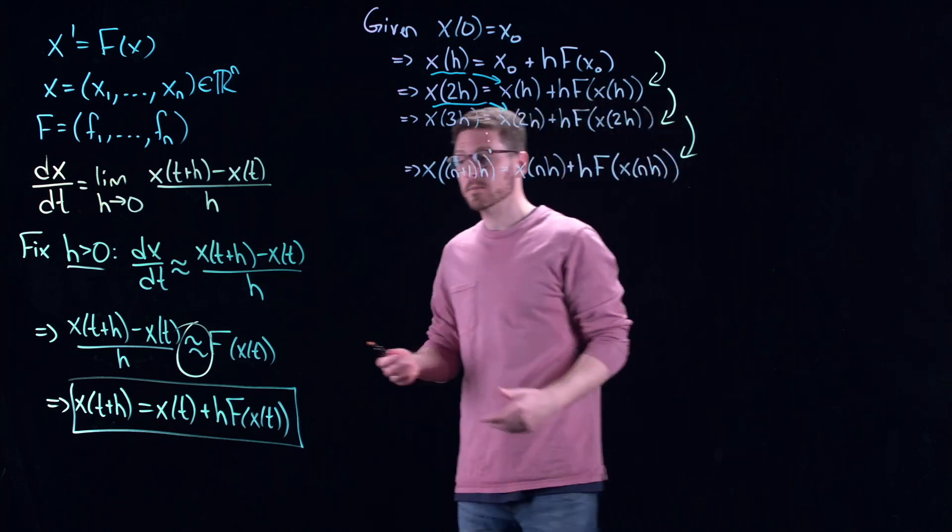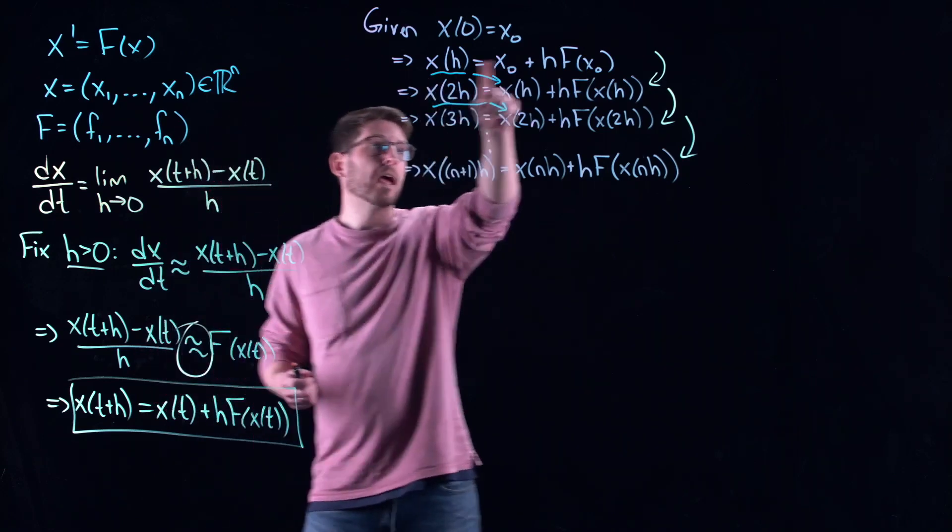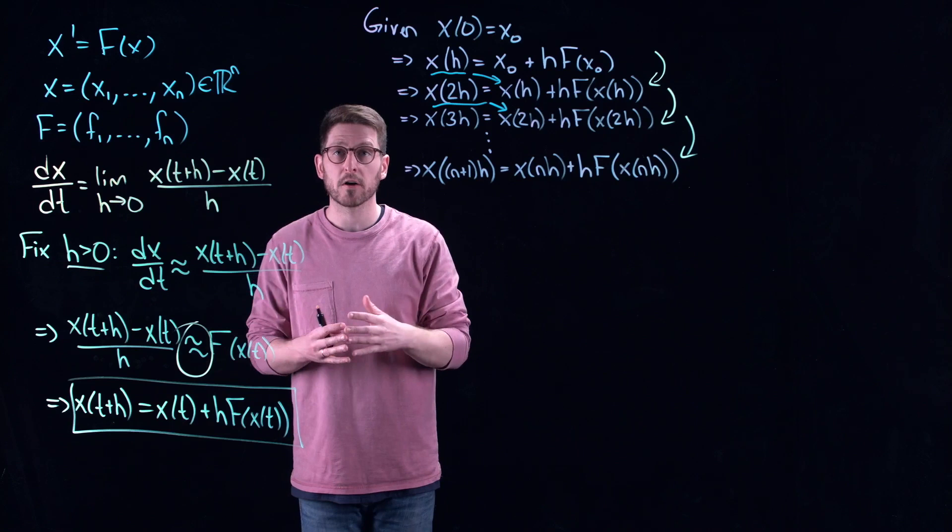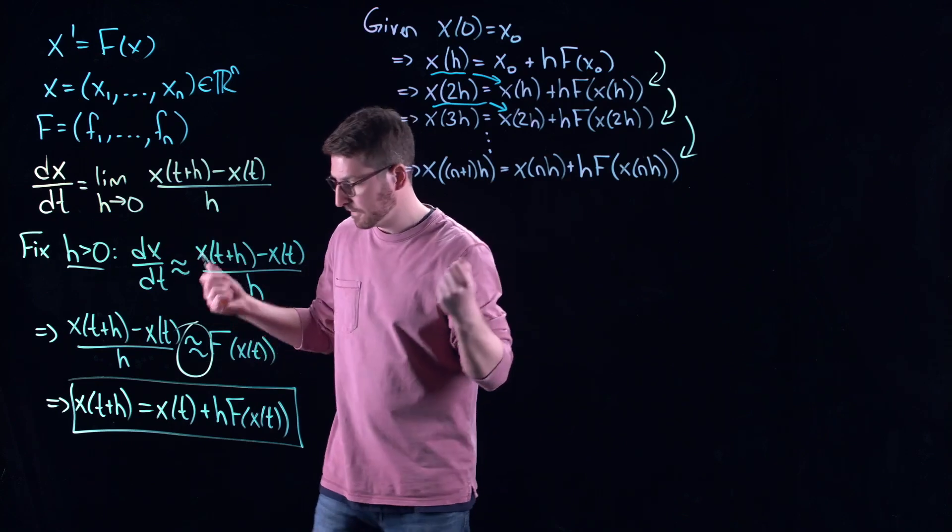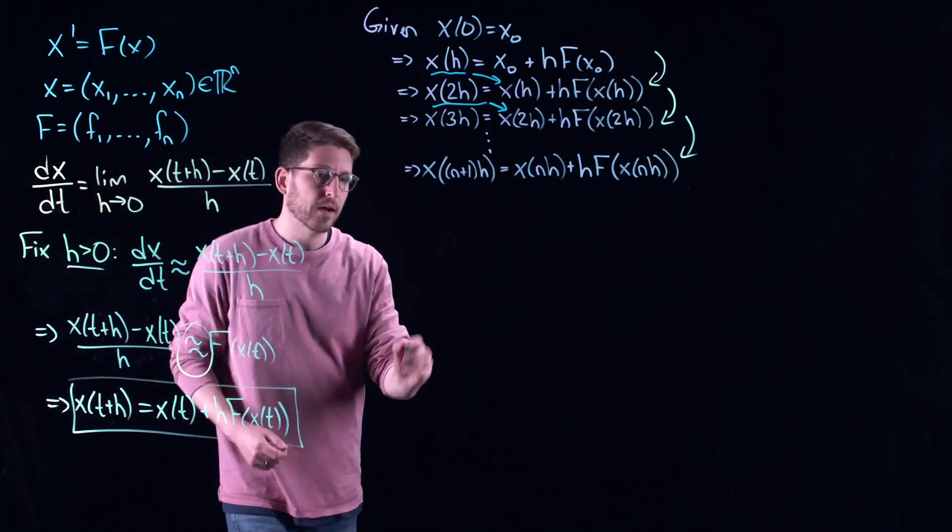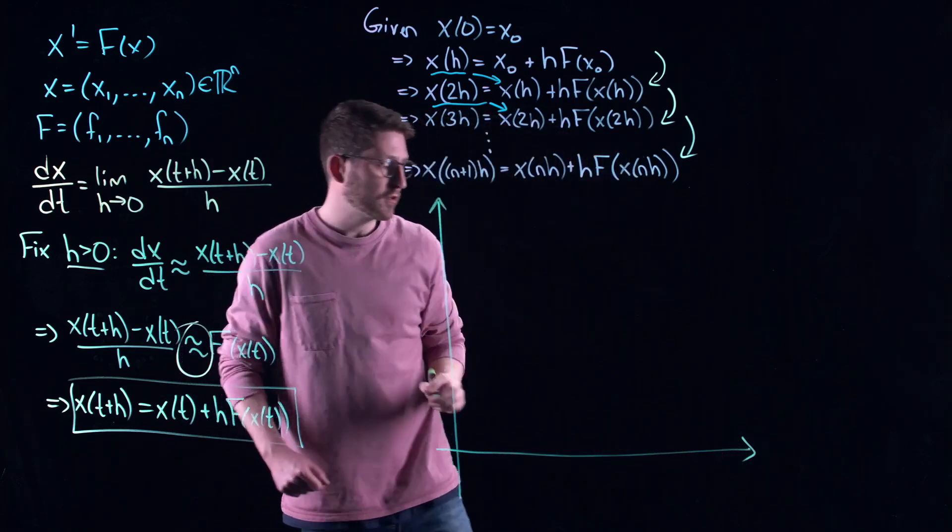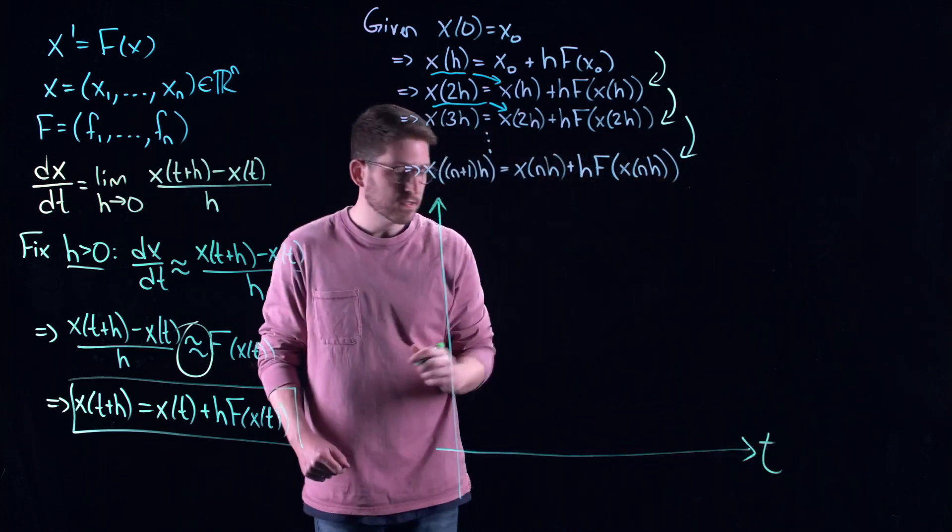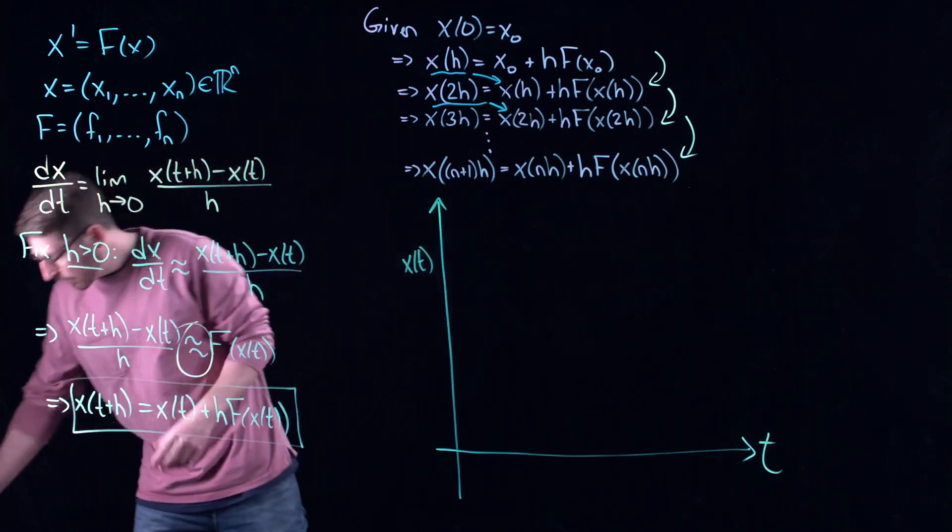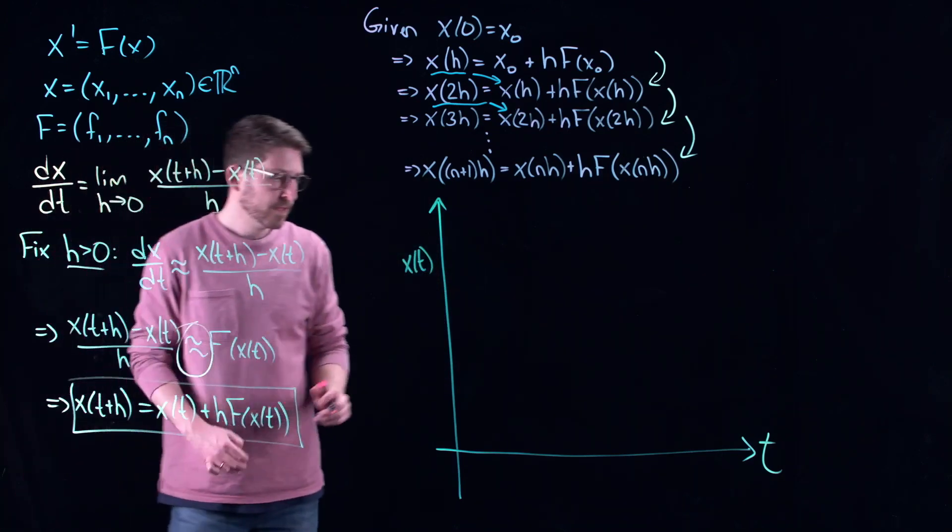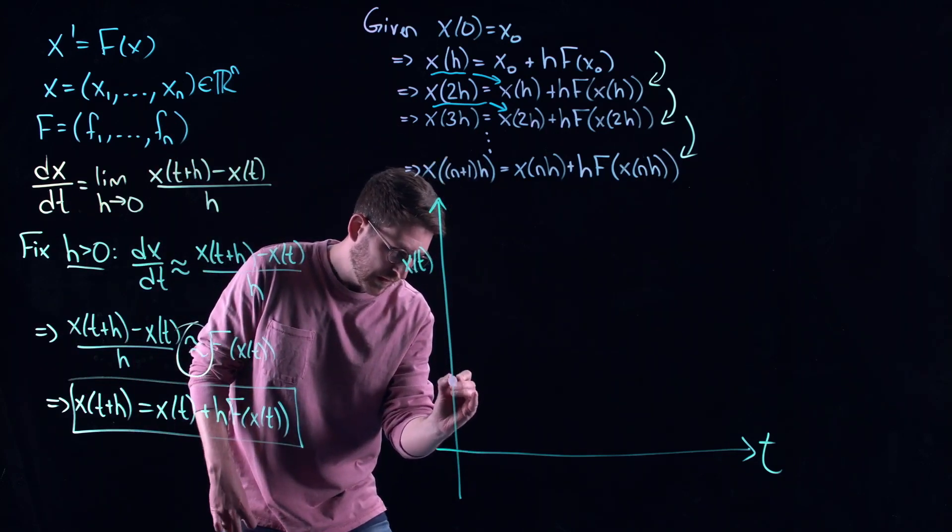So you can see that there's sort of a cascading error here. The further I go into the future, the more error is being accumulated. This is the computational trade-off that happens. Clearly, I want h to be very small, so that this is extremely accurate. But if h is really small, then it takes forever to get anywhere. Imagine h is 1 over 1,000. That means I need to do this process 1,000 times to just go one time unit into the future.